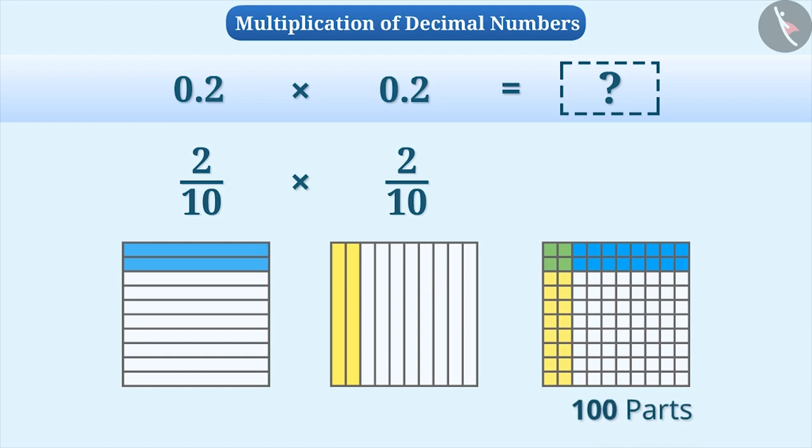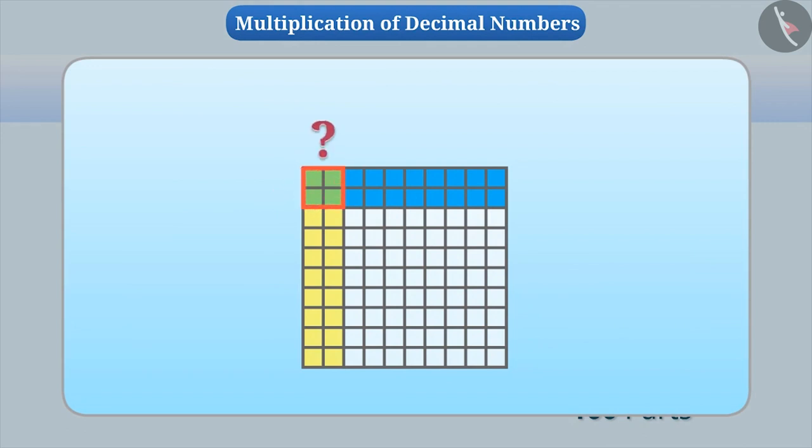By doing so, we will get a total of 100 equal parts. The value of 2 by 10 multiplied by 2 by 10 will be the common part of both squares. Can you tell me what will be the common part of these squares? Think for a while.